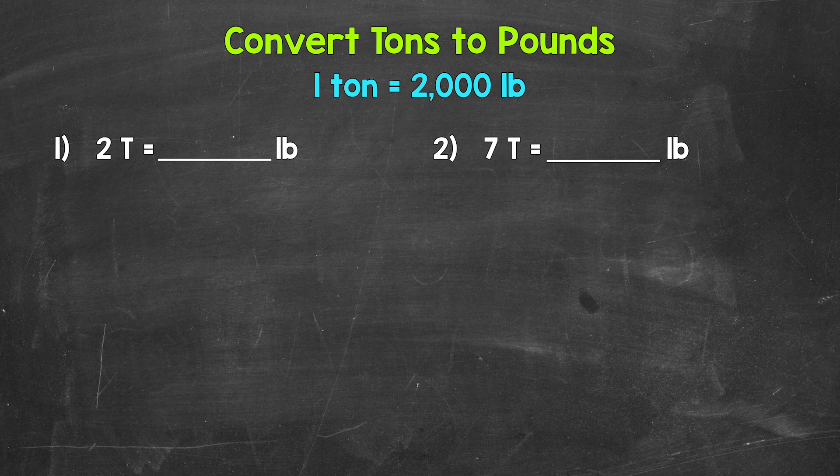Now remember, one ton equals 2,000 pounds. Let's jump into our examples, starting with number one, where we have two tons equals how many pounds?